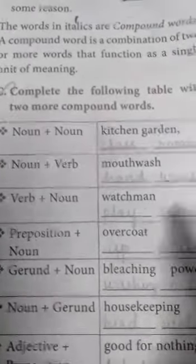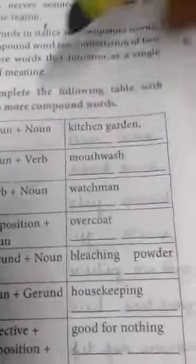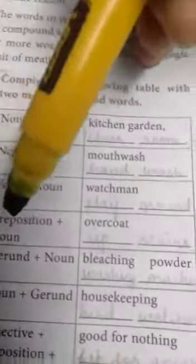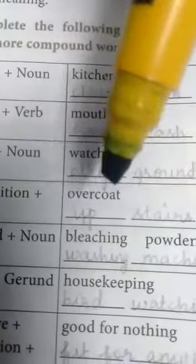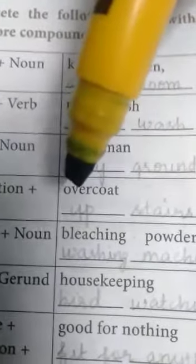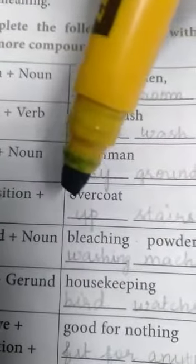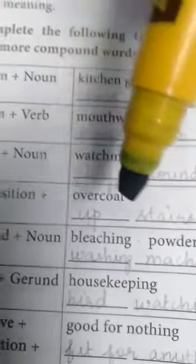Another example is given, and you can add your own examples also. Then preposition plus noun — for example, 'overcoat.' You can split each word separately and each part has one unit meaning. Here 'over' is the preposition, a part of speech.